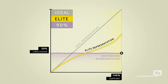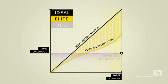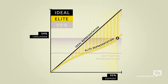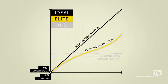Look at how much closer their line is to the ideal. When they want something, the government is much more likely to do it. And when they don't, they have the power to completely block it from happening, no matter how much the rest of the country supports it.